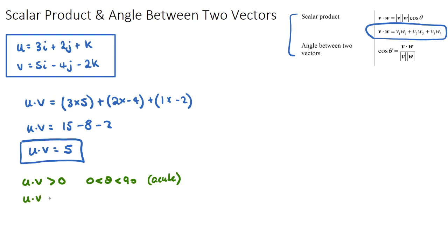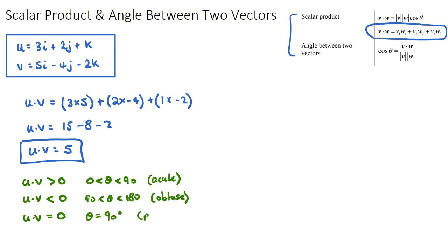If the dot product comes out to be a negative value — less than zero — the angle between the two vectors will be obtuse, between 90 and 180 degrees. And if the dot product is exactly zero, the angle between the two vectors will be exactly 90 degrees, which means they are perpendicular. This is a very important concept for IB math exam questions, especially paper one without a calculator — if the scalar product equals zero, the two vectors are perpendicular.